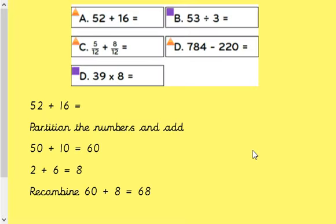Okay, next question. We're going to look at the first mental strategy question, which is 52 plus 16. First thing I would do is partition the numbers and then I'll add them together. So if we had 52, it would be 50 and 2, and 16 would be 10 and 6. So if we add the 10s together, we get 60. And if we have the 1s together, 2 plus 6, we get 8. We then recombine the numbers and that makes 68. By far the most efficient method.